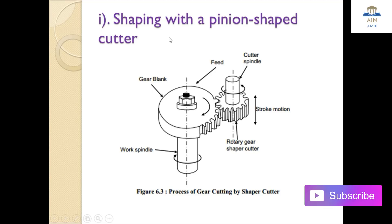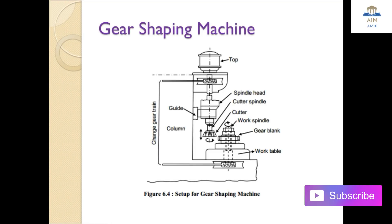In the gear shaping machine setup, power and motion are transmitted from the motor through the spindle head, upon which the cutter spindle and cutter are mounted. The gear blank is mounted on the work table as a circular disc on the work spindle. The cutter simultaneously cuts the gear blank in the gear shaping machine.